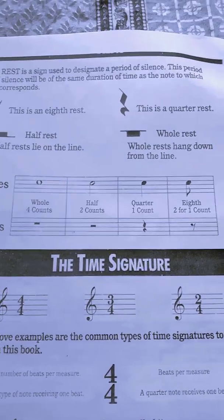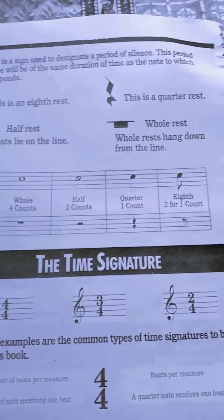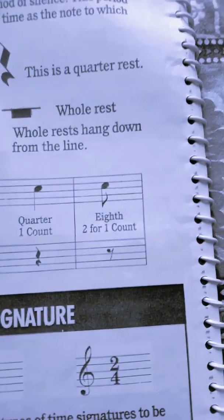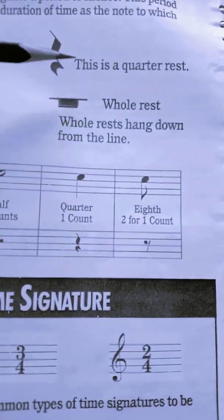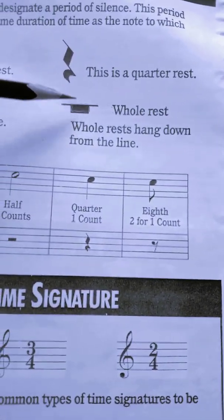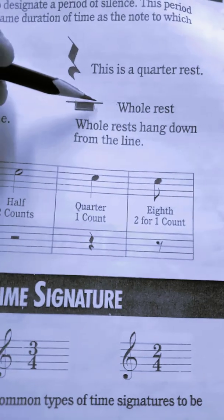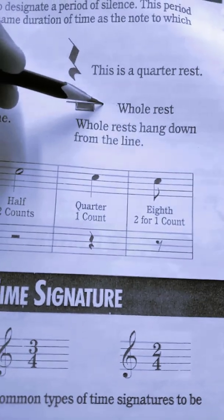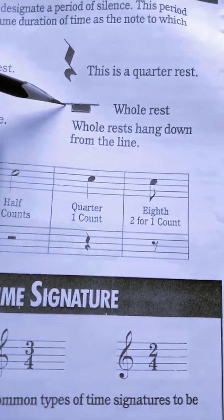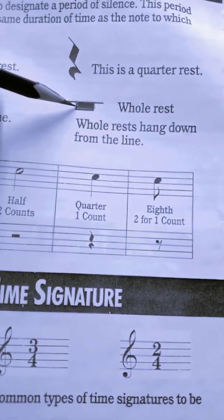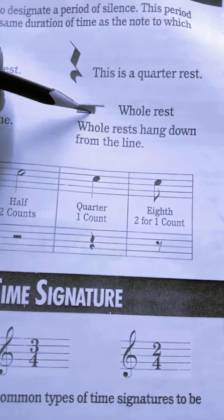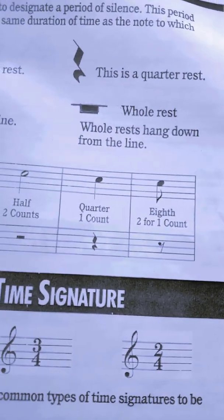We will start with a whole rest. This is what a whole rest looks like. It has a horizontal line with the rest hanging below the line.